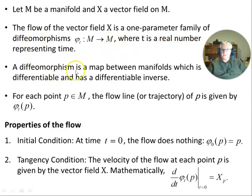A diffeomorphism is a map between manifolds which is differentiable and has a differentiable inverse. Now, for each point belonging to the manifold M, the flow line or trajectory of p is given by phi_t of p.